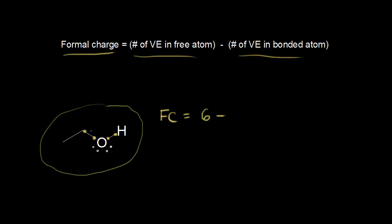When you have a bond with two electrons, we give one electron to one atom and the other electron to the other atom. So from these two electrons, oxygen gets one. Same thing for this other bond — oxygen gets one of those electrons and the other electron goes to hydrogen. So now we have a total of six electrons around our oxygen: one, two, three, four, five, six. So six minus six is equal to zero, and the formal charge on oxygen is equal to zero.